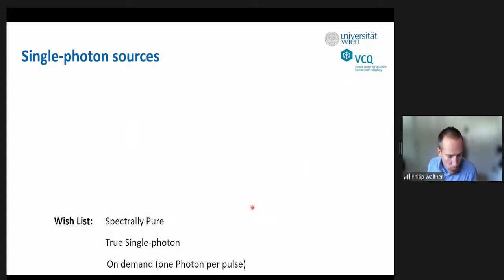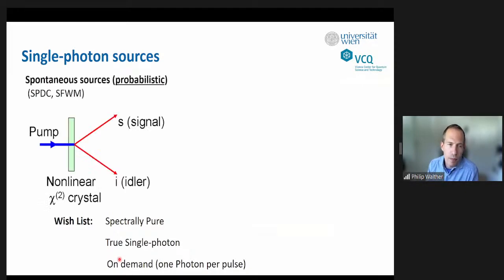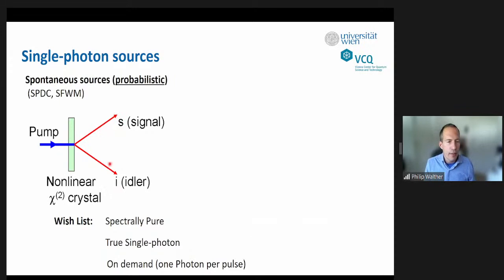We want photons that are ideal — pure, with no noise contribution, no extra photon, just one at a time — and we want them on demand: push a button and a photon comes out. This is extremely hard. The most popular source so far is based on a probabilistic process called spontaneous parametric down conversion, where a laser penetrates a nonlinear chi-2 crystal and randomly photon pairs are emitted — one blue photon becomes two red photons, preserving energy and momentum. The limiting factor is it's random, and noise arises from sometimes getting two pairs.